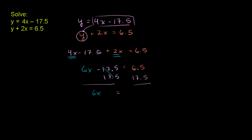6x is going to be equal to, let's see, 6 plus 17 is 23, and then 0.5 plus 0.5 is 1. So this is going to be 24. And then we divide both sides by 6. And you are left with x is equal to 24 over 6, which is 4.